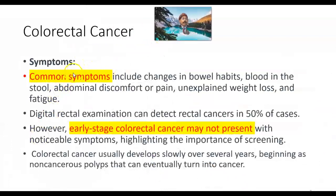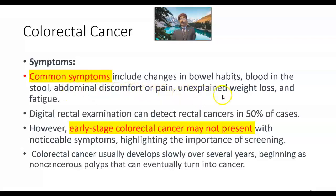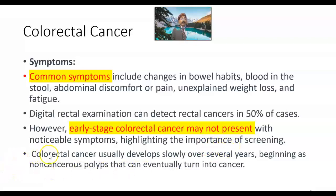Colorectal cancer symptoms include changes in bowel habit, blood in the stool — called hematochezia, or sometimes melena with altered blood. Abdominal discomfort, pain, unexplained weight loss, and fatigue are also common. Digital rectal examination can detect rectal cancer in 50% of cases. However, early-stage colorectal cancer may not present with noticeable symptoms, highlighting the importance of screening. Colorectal cancer usually develops slowly over several years, beginning as a non-cancerous polyp that can eventually turn into cancer.